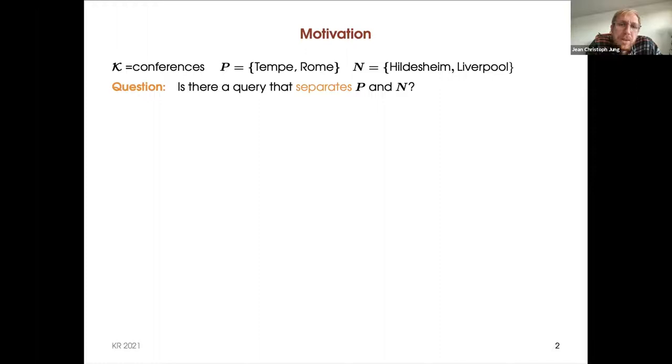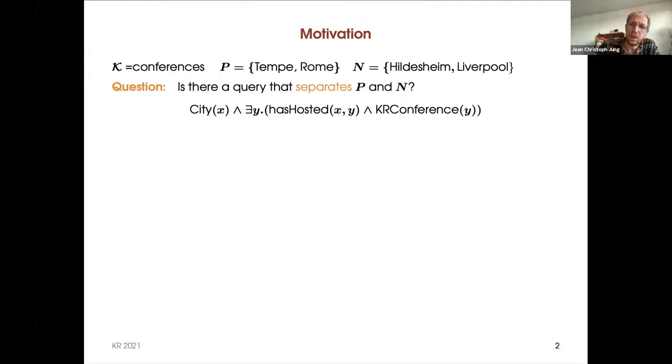The question is whether there is a query that separates the positive from the negative examples. In this case there is one, namely: give me all the cities that have hosted a KR conference.